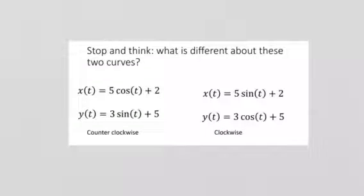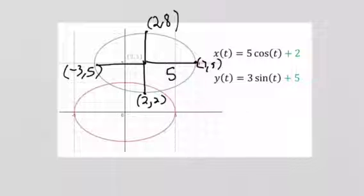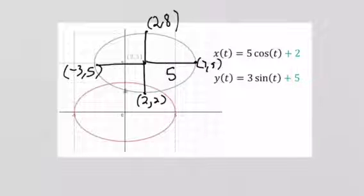Looking at the curve with x = 5cos(t) and y = 3sin(t): when t = 0, cosine is 1, so x = 5(1) + 2 = 7, and sine is 0, so y = 5. We start at the point (7, 5) and the point travels counterclockwise around the ellipse. If sine comes as x instead, the object goes clockwise, but both follow the same elliptical path, just in different directions.